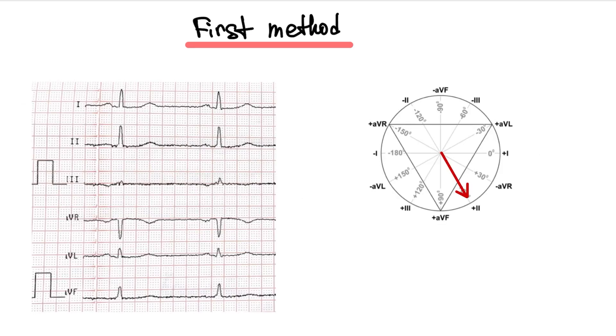How we can interpret it? We have some methods and one of them is to calculate the alpha angle. Alpha angle is an angle between the vector of ventricular depolarization and the first limb lead.